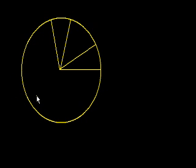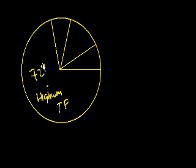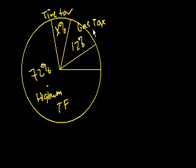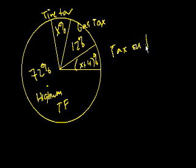And they say that this is the highway trust fund, which is 72%. They say x% is a tire tax. This is 12%, which is a gas tax. And then you have x plus 4%, which is a tax on trucks. According to the graph above, what percent of the funds for highway maintenance came from the tax on tires? Okay, so we need to solve for x. So let's think about it.